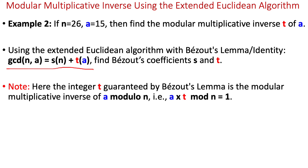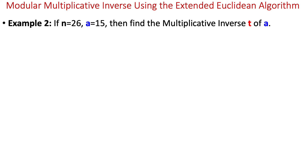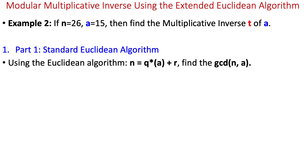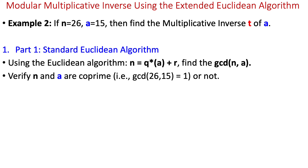I have already explained Bezout's lemma, the Euclidean algorithm, and the extended Euclidean algorithm in the previous video. We will perform the complete calculation in two parts. In Part 1, we compute the GCD of n and a using the standard Euclidean algorithm and verify whether the GCD is 1 or not. If GCD is 1, n and a are co-prime and we move to Part 2 to find the multiplicative inverse. If GCD is not 1, n and a are not co-prime and we cannot find the multiplicative inverse.